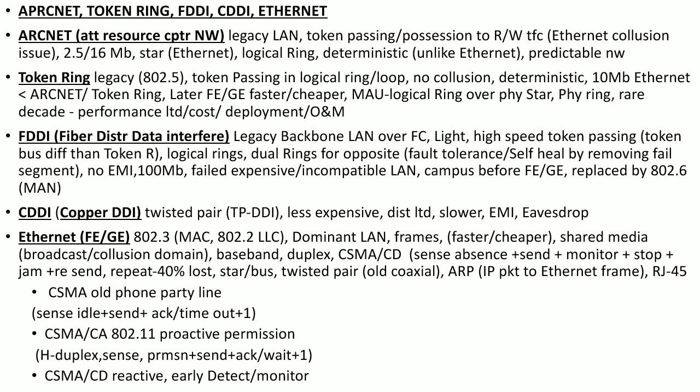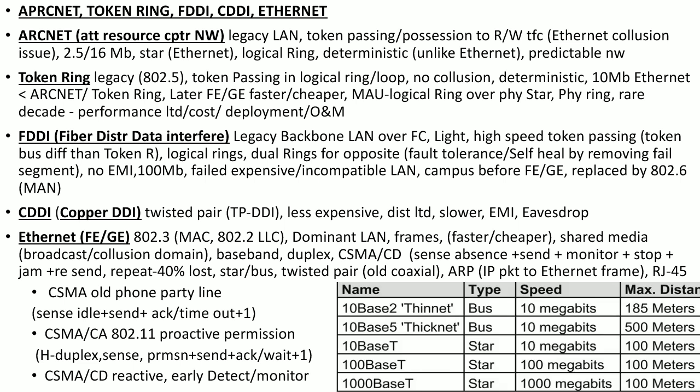The third variant is CSMA/CD, used by 802.3 or Ethernet, which was discussed earlier. It is actually reactive, not proactive, but it can detect collision earlier than other protocols because it continuously monitors the media for any collision or any other device trying to transmit a signal at the same time.